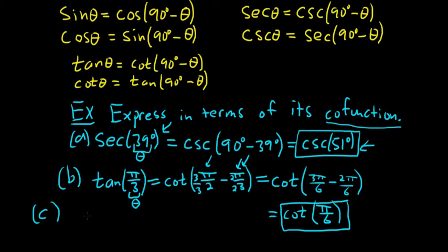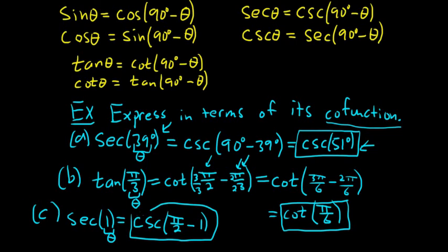One more. Let's do another one with secant. Say secant of 1. Whenever you write 1 and there's no degree symbol, you have to assume it's in radians. So this would simply be the cosecant of pi over 2 minus theta. And our theta here is simply 1. So it's just pi over 2 minus 1. And that's it. You leave it just like that. I hope this video made sense.